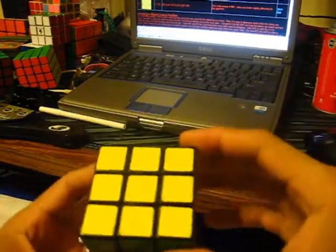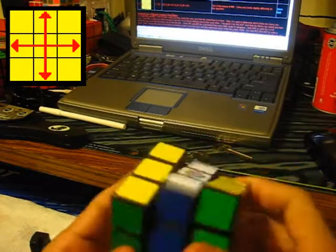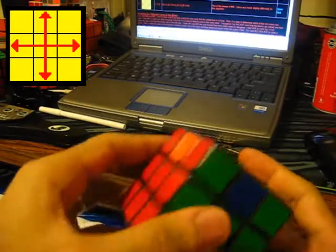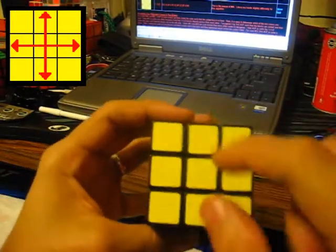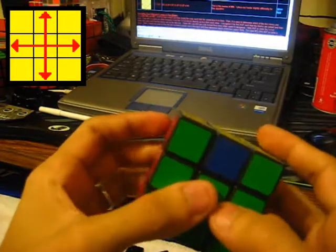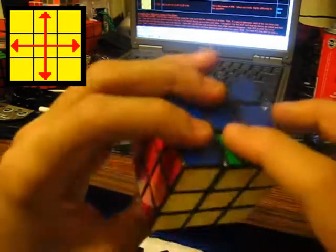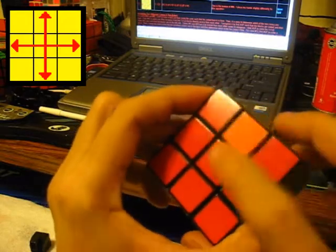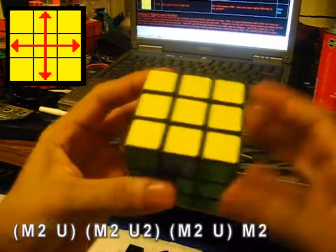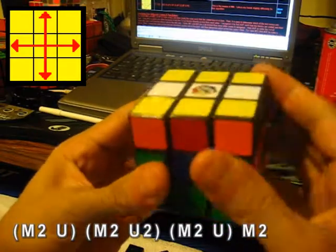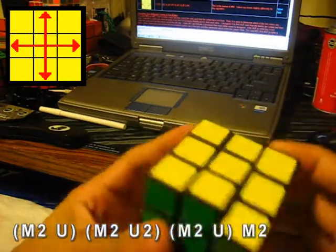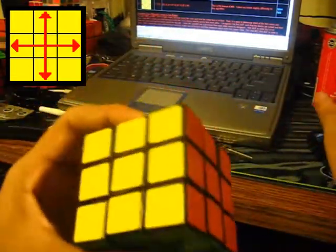So recognizing permutations of the last layer is pretty easy. Like this one, see how the arrows are saying from top to bottom and left to right? It's pretty much saying that your top and bottom edges are backwards—green blue, blue green—and that your left and right are backwards too—red orange, orange red. So what you do is you just go ahead and do the algorithm that tells you: M2 U M2 U2 M2 U M2 U M2. And that's it, that's pretty much how you read PLLs.